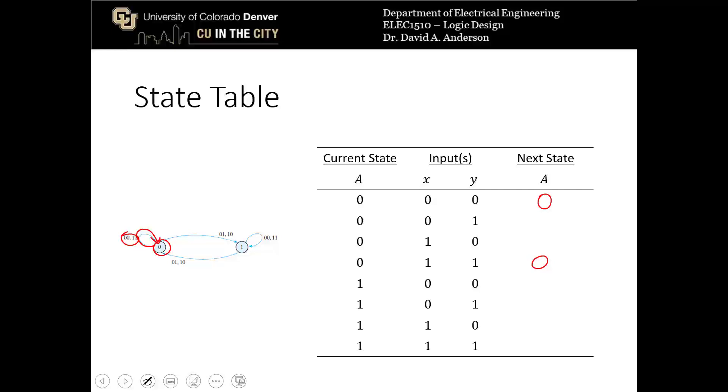When I'm in state 0, and the inputs are either 0, 1 or 1, 0, I follow this arrow and move to state 1, so I can fill in those rows. When I'm in state 1, and the input is either 0, 0 or 1, 1 here, I stay in state 1, so I can fill in those rows. And then when the input is 0, 1 or 1, 0, I return to state 0, so I can now fill in those rows. So there's the state table for this state diagram, which has two inputs rather than just one input.